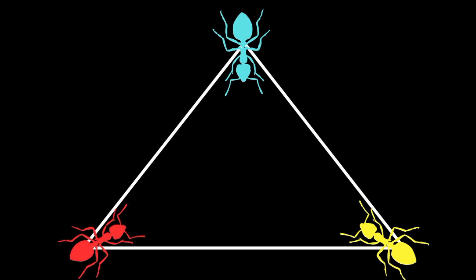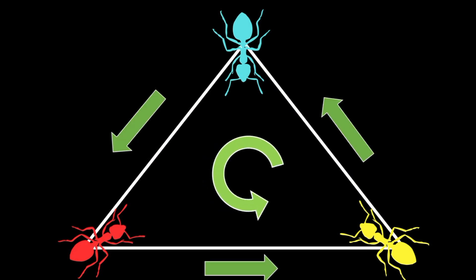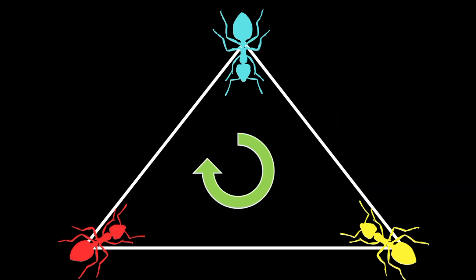Note that the direction of movement of the ants is binary. Each of them will pick an edge that moves them in the anticlockwise or clockwise direction.